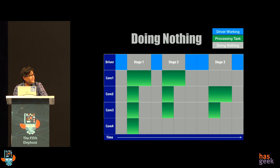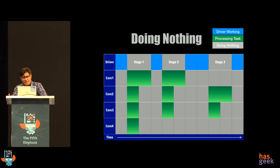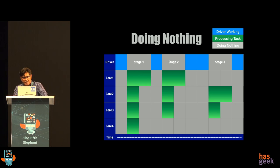This is one of the most important slides, and I'll keep referring to it throughout the presentation. 'Doing nothing' is what we're going to focus on to understand how Spark Lens works. On the Y-axis we have driver and cores — core one, two, three, and four — and on the X-axis is time. If you've looked at Spark UI, this is probably very familiar. The green boxes are the tasks scheduled on different cores.